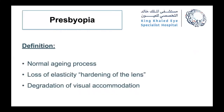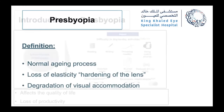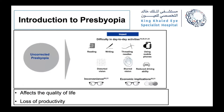Presbyopia is a normal aging process where we lose the elasticity of the lens; the lens becomes hard, and we have a degradation of visual accommodation. This translates into a loss of functional near and intermediate vision. We all live in a near and intermediate world — most of our daily activities involve the phone, laptops, writing, and reading — so presbyopia touches every aspect of our life and affects quality of life.